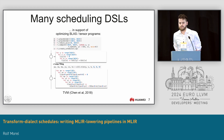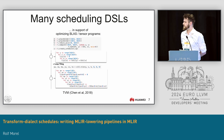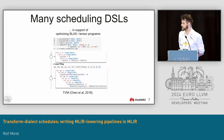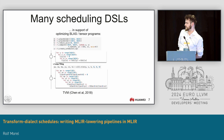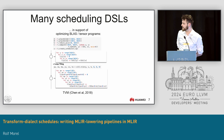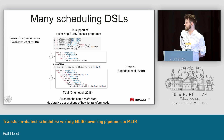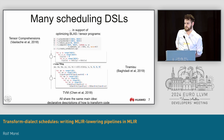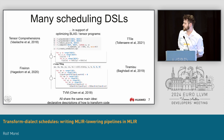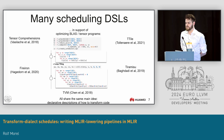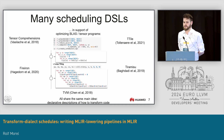Given the success of Halide, this notion of schedules has been applied to some other domains. In particular, it has had success in optimizing BLAS and tensor programs. Here we see an example from TVM, where they apply some tiling to a GEMM. There have been a number of other scheduling languages as well in recent years, all sharing the same main idea: they give you declarative descriptions of how to transform high-level code to optimized code.